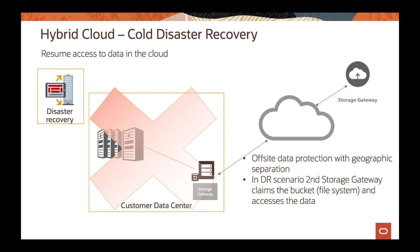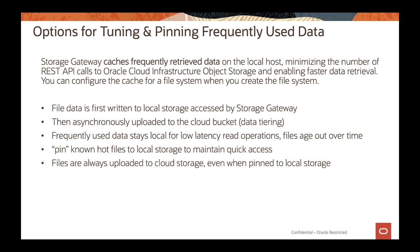Another option is cold disaster recovery. You can create a standby environment in OCI, and the storage gateway continuously copies your data from on-premises to object storage. If something goes wrong, you can easily access that data from object storage to recreate your environment in the cloud.